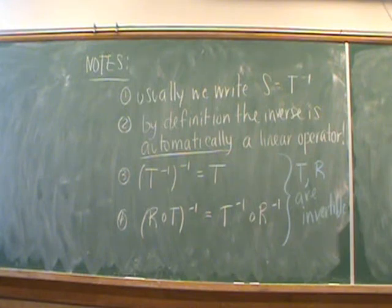So there are quite a few notes just for some clarification purposes that I want to give to you based on this definition. So if we can find this linear operator S so that the composition of S and T in either direction gives us the identity operator, we usually say that S is the inverse of T and we'll write it with the usual notation as T inverse.